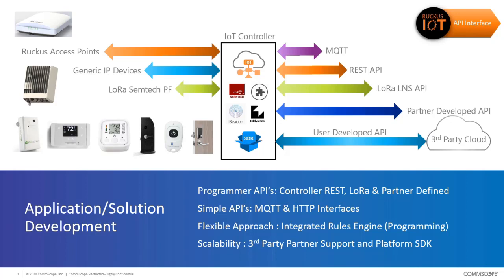We need to think about how we integrate data from the Ruckus access point with its IoT radios. If we're using a third-party access point — for example a LoRa gateway — how do we bring in data from that gateway, manage it, and check the status of the gateway and all attached devices? We might also have wired or wireless partner sensors, or platforms from environmental management systems — how do we bring that data into our platform and manage it within the same environment?